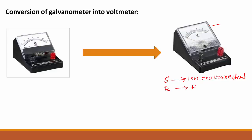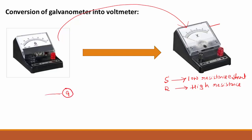Capital R is used to denote the high resistance. Galvanometer can be converted into voltmeter by connecting a suitable high resistance in series with that galvanometer. This galvanometer can be converted into voltmeter by connecting a suitable high resistance R in series in this circuit.